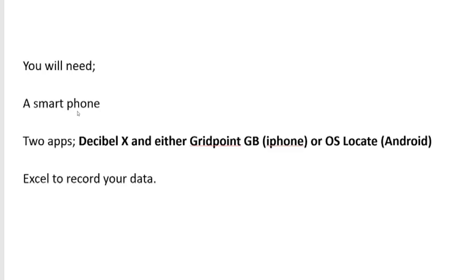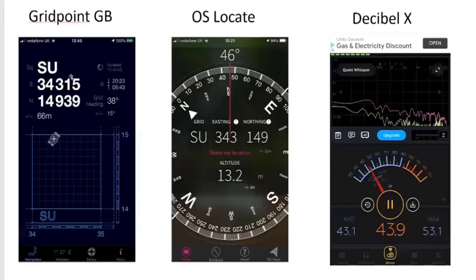Wherever you're stood, you should be able to get the six or ten-figure grid reference of that particular point. GridPoint GB on the left gives us a ten-figure grid reference point. Kim's asking — yes, you can use iPads. Decibel X works perfectly fine on a tablet. OS Locate is the Ordnance Survey version; it only goes down to six-figure, but it also gives you the altitude and height of a location.